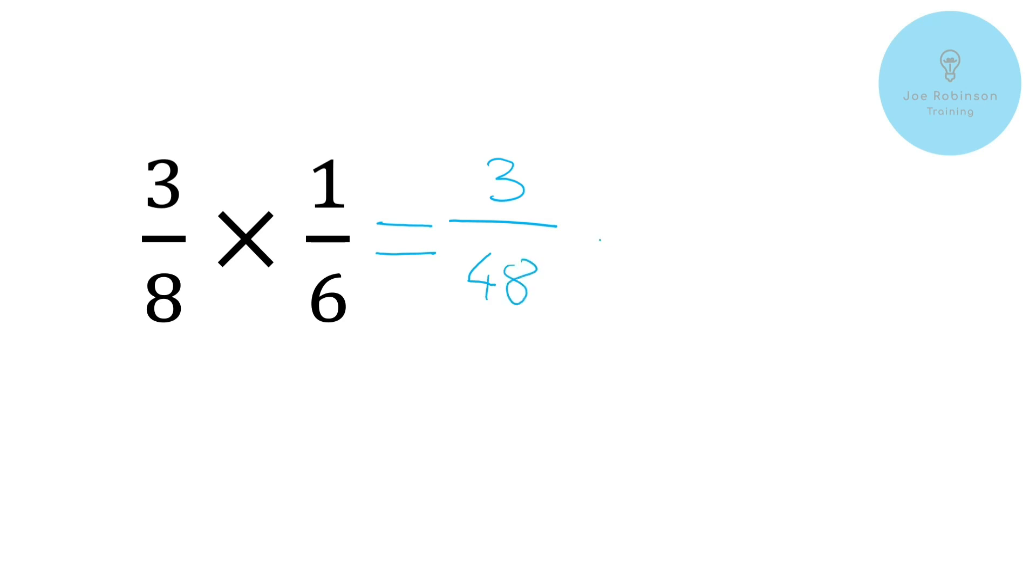Okay so we've got three forty-eighths which is not a very pleasant fraction at all. So let's see what we can do to make that a little bit nicer. Three forty-eighths doesn't exactly roll off the tongue does it? So let's see if we can simplify this down at all. Now bearing in mind again we're looking for numbers that both of these will divide by. Always start with the smallest prime number that you can. So two. Obviously three isn't going to divide by two so we move to the next number along and the next number up is three.